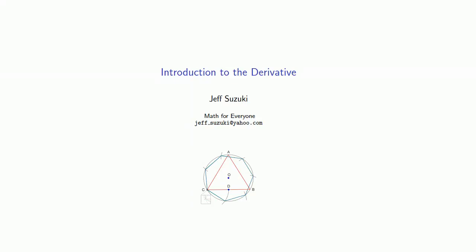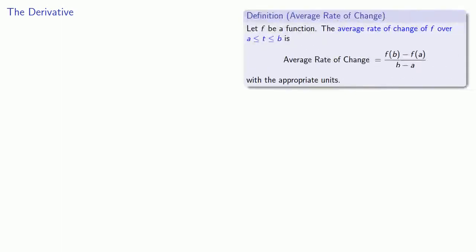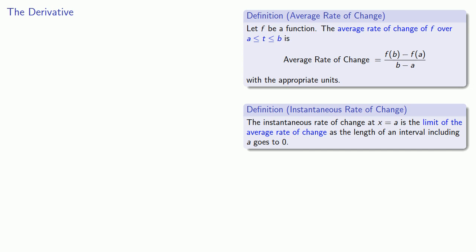So let's introduce the derivative. Hello derivative! So our path to the derivative starts with this notion of the average rate of change, after which we define the instantaneous rate of change as the limit of this average rate of change.